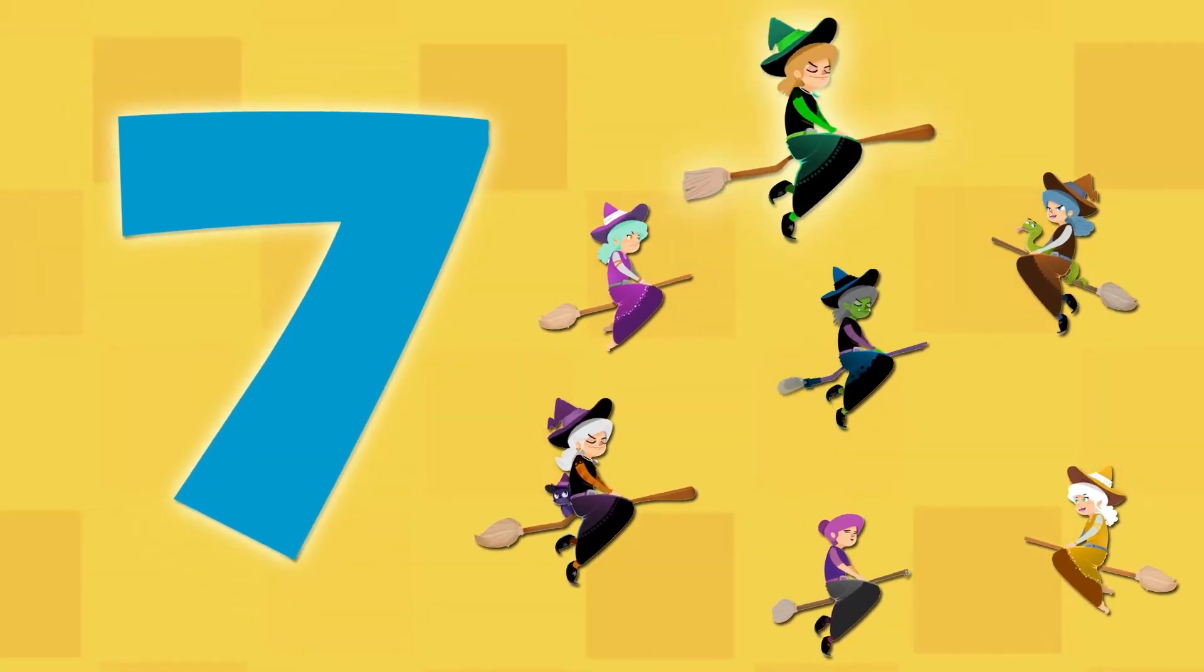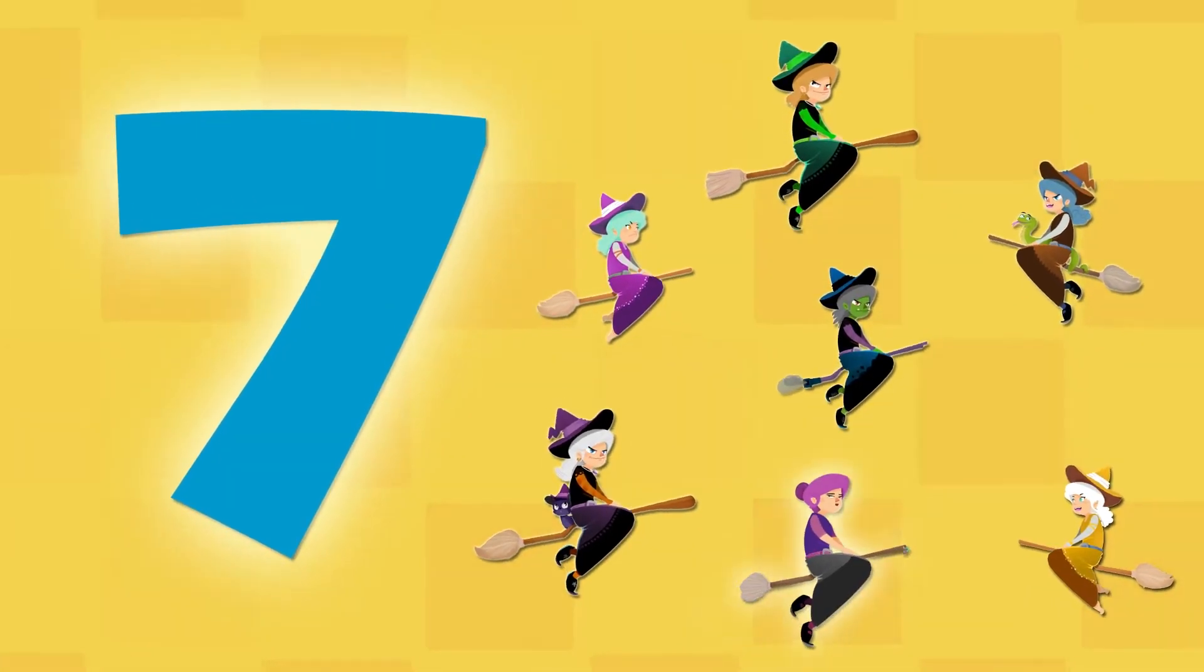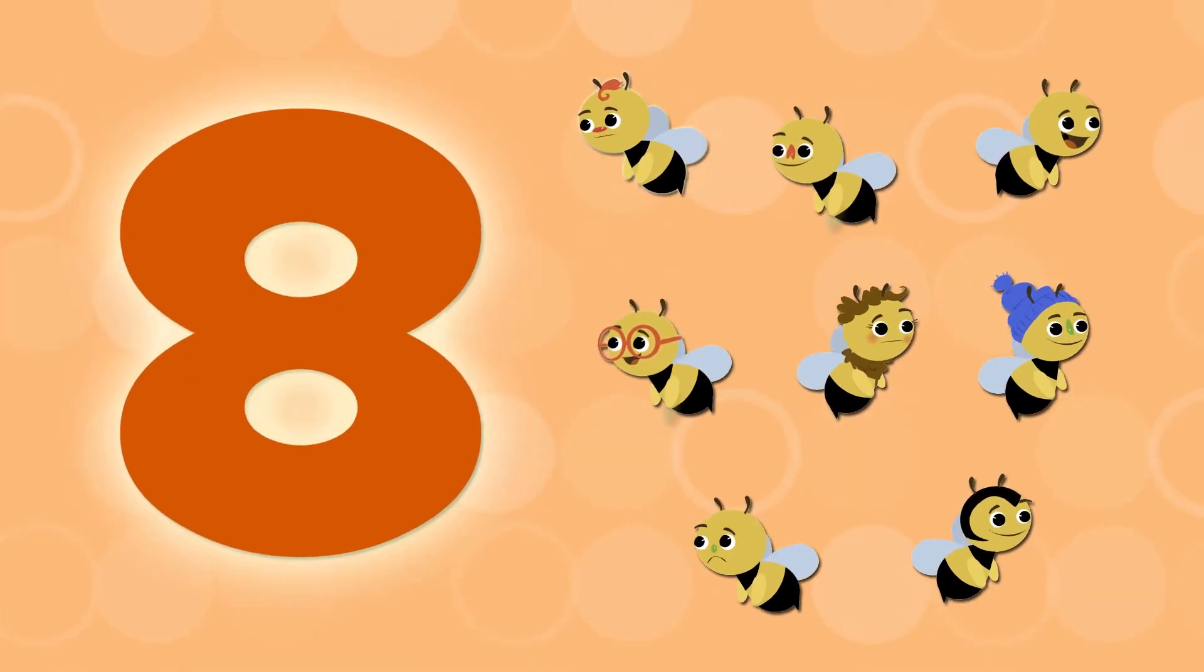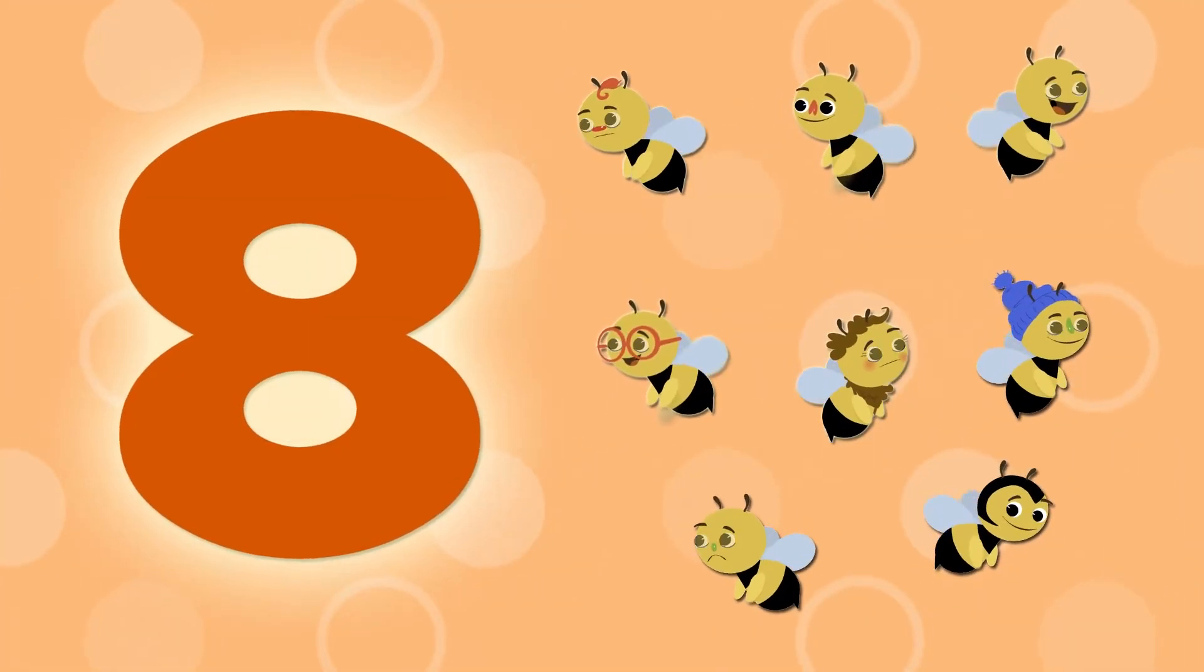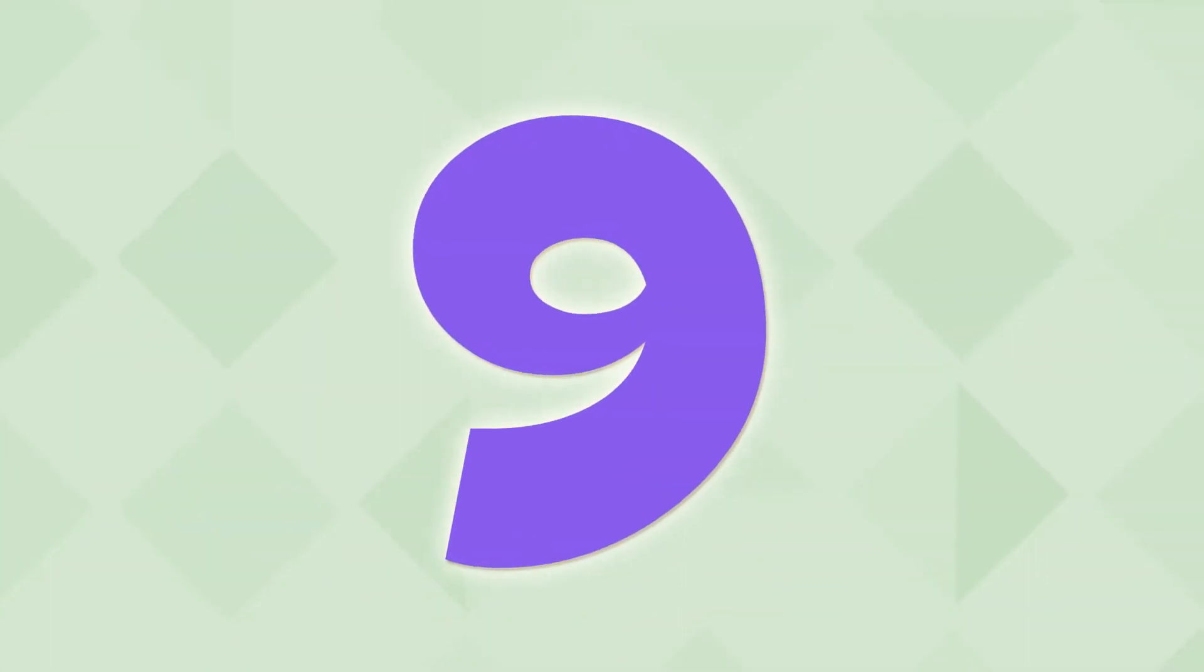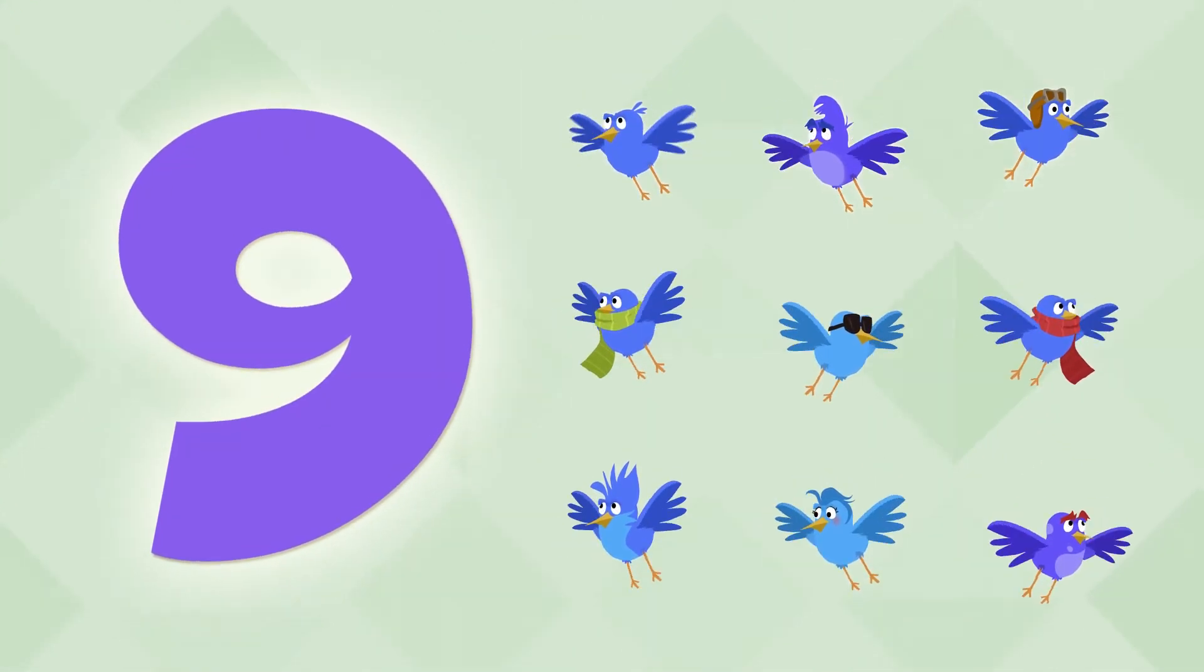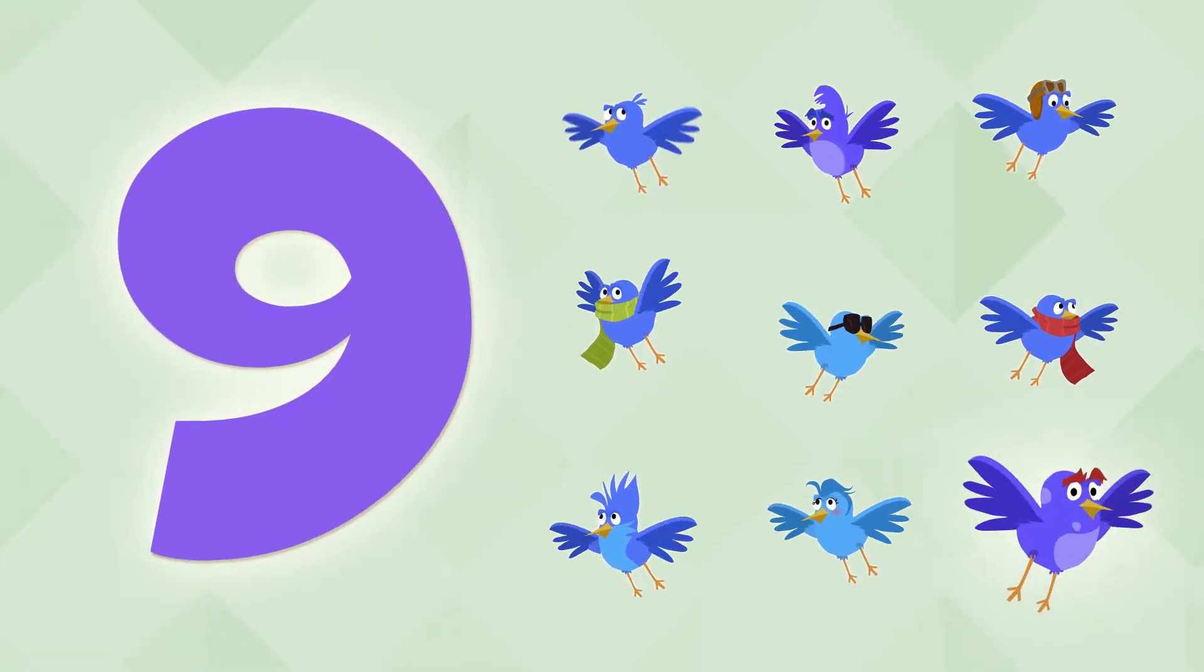And here we have number six. There are six wizards. One, two, three, four, five and six. This is number seven. There are seven flying witches. One, two, three, four, five, six and seven. Number eight is this one here. There are eight bees. One, two, three, four, five, six, seven and eight. This is number nine. There are nine birds. One, two, three, four, five, six, seven, eight and nine.